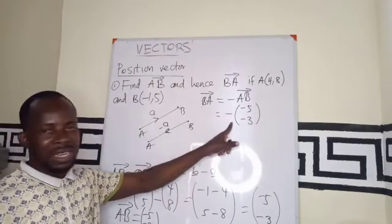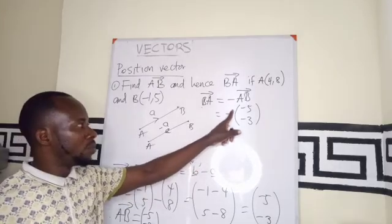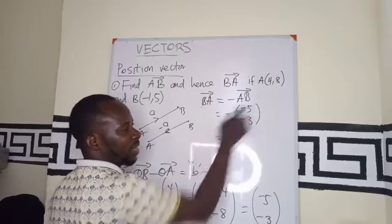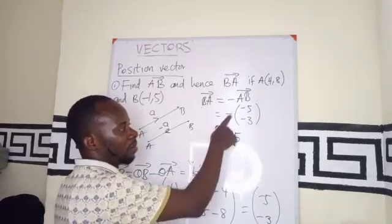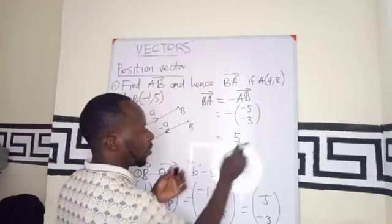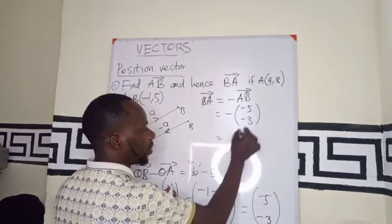We know there is a 1 in front of the bracket. So, -1 times -5 is negative. So, -1 times -5 will give us positive 5. -1 times -3 will also give us positive 3.